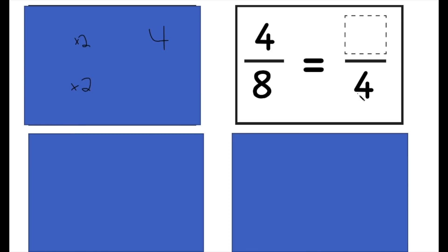And 8 times 1 equals 8. So now we know that we're going to have to divide. So 8 divided by what equals 4? Well, 8 divided by 2 equals 4.